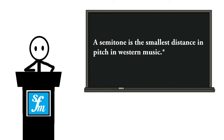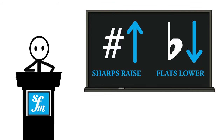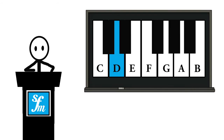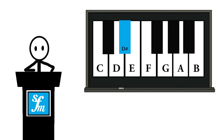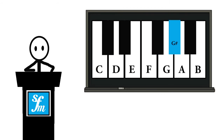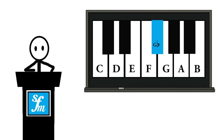Of course there is an asterisk — there are exceptions to this statement, but that's not in the scope of this discussion. For now, sharps raise and flats lower. On the piano, notes to your right are higher and notes to your left are lower. So if this note is D, then this note is D sharp. If this note is G, then this note is G sharp. Similarly with flats — this is D and this is D flat; this is G and this is G flat.